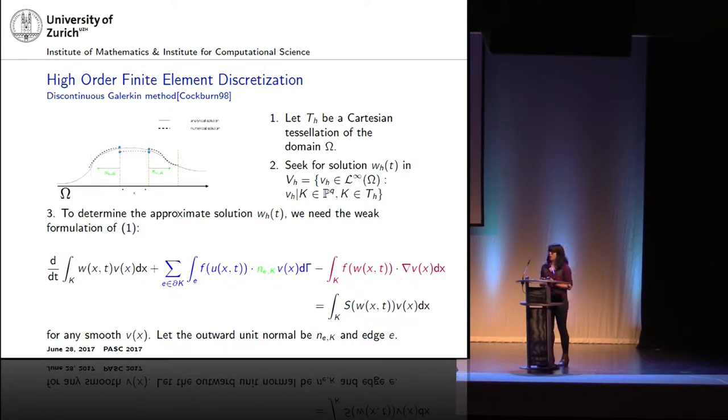Because we are dealing with hyperbolic problems, I'll show you the formulation of the discontinuous Galerkin method. This was introduced in 1998 by Cockburn. This is just a simple 1D example. You go from a domain omega, and first you have to discretize this. We put a tessellation, a Cartesian tessellation, and we call it T_H, and now we are seeking for a solution which is going to be high-order, which lives in this space. This essentially means that it's a globally discontinuous solution, but that locally is approximated with a polynomial of at most degree k.